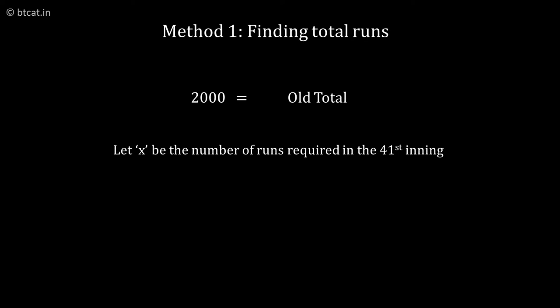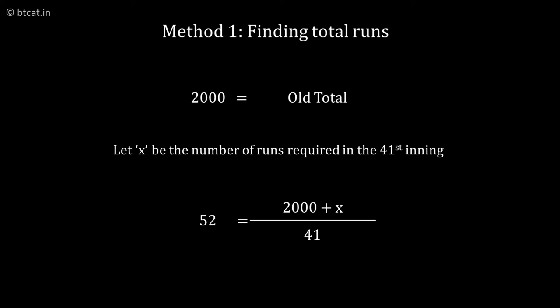If he has scored x runs in his 41st inning, the total will become 2000 plus x, and that should correspond to 41 into 52, which is the new average, and 41 is the new number of innings.